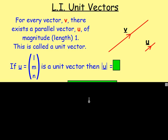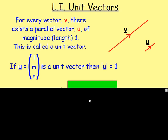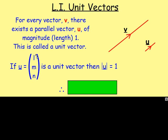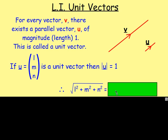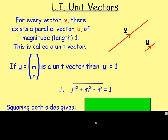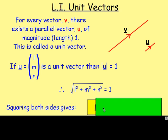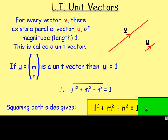So if U is your unit vector and it has the components L, M and N, well your unit vector has a magnitude or a length of just one. How do you get the magnitude of a vector? You would have the square root of L squared plus M squared plus N squared, and if it's a unit vector, it will then be equal to one. If you square both sides, you will find that L squared plus M squared plus N squared equals one.